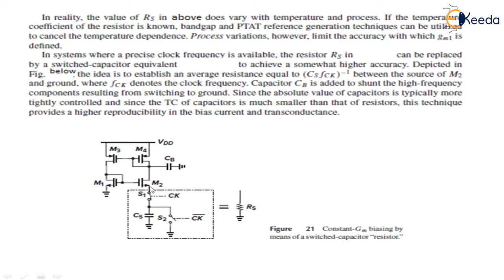This switched capacitor equivalent is applied between the source of M2 and ground. Capacitor Cb is added to shunt the high frequency component which results from switching to ground. Since the absolute value of the capacitor is typically more tightly controlled, and the temperature coefficient of a capacitor is much smaller than that of Rs, this technique provides higher reproducibility in the bias current and transconductance. This is a circuit used for constant GM biasing by means of a switched capacitor resistor, where Rs = 1/(Cf·fck).